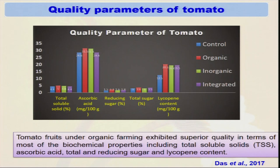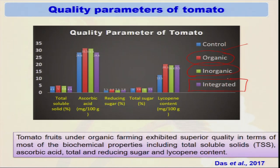Some experiments done in ICAR research farms have also shown the quality of organic food. One classical example is in the case of tomato — when tomato was grown under different systems: control with no fertilizer or pesticide, organic with only FYM and other bio-fertilizers, inorganic with only inorganic fertilizers, and integrated with 50 percent nutrients through organic and 50 percent through inorganic. The ascorbic acid content in the organic condition was significantly higher compared to the control and inorganic samples. Similarly, lycopene content was always higher in organic farming. It has been proven that organic farming produces better quality food.